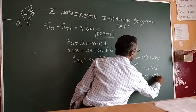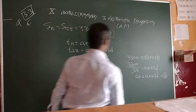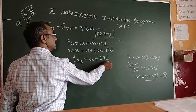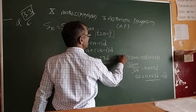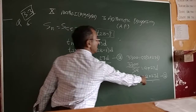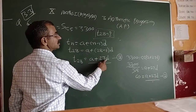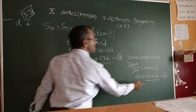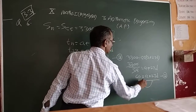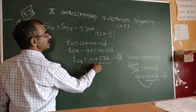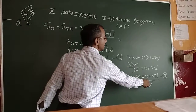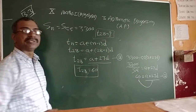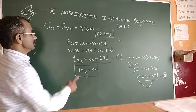Now, T28 = A + (28-1)D = A + 27D. We can see that A + 27D is also present in equation 2, where its value is 60. Therefore T28 = A + 27D = 60. The value of the 28th term is 60. Understood?